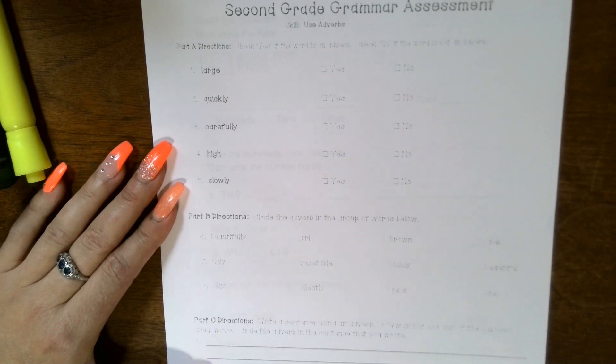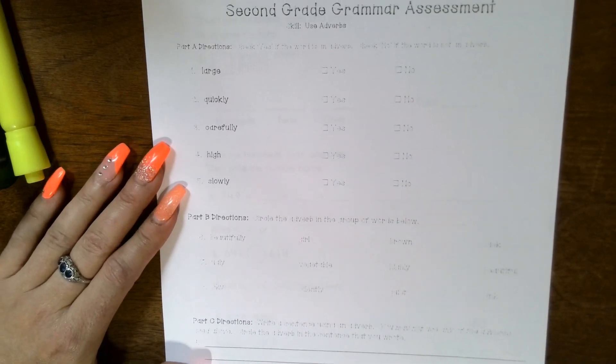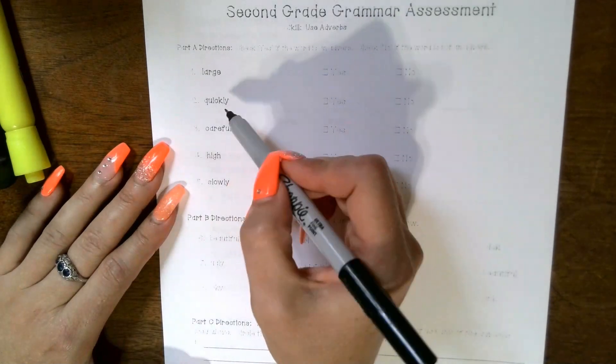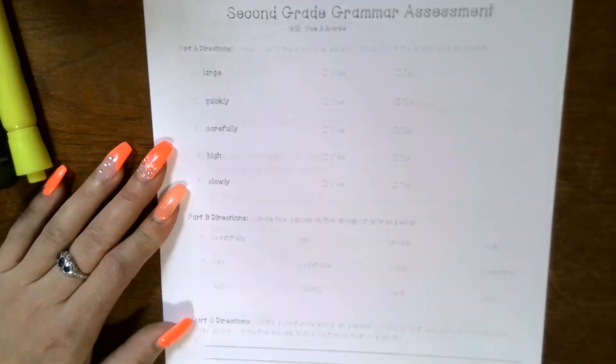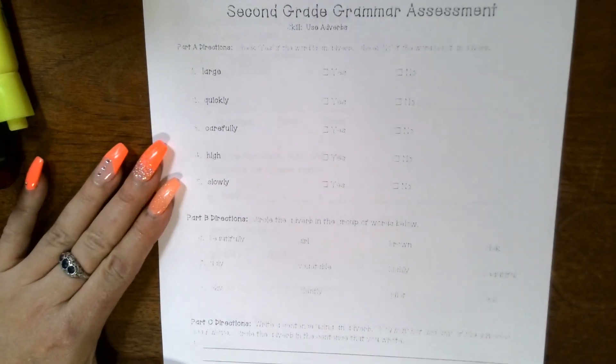In one through five, you're checking yes if it's an adverb, no if it's not an adverb. Your words are: one, large; two, quickly; three, carefully; four, high; five, slowly.